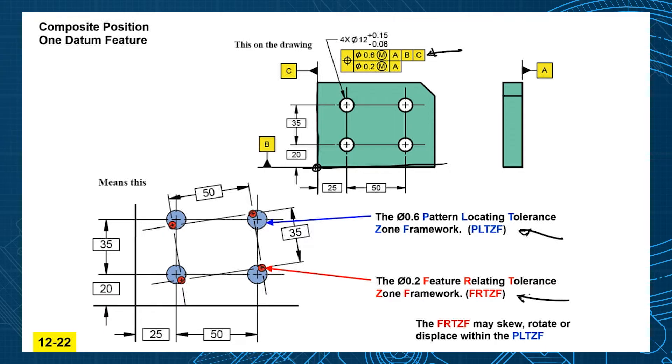In the standard they call that top one the pattern locating tolerance zone framework or the PLTZF because it locates the pattern to the datum reference frame. And that lower one they call the feature relating tolerance zone framework because it relates the features to each other, or the FRTZF.